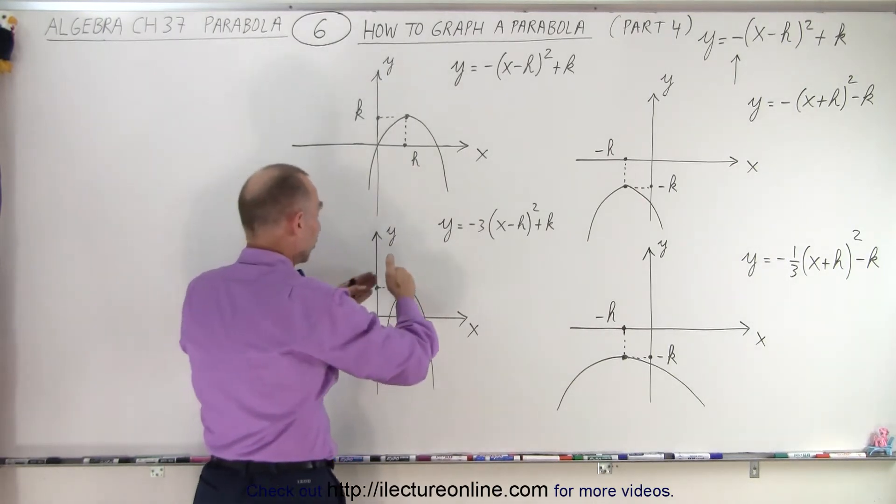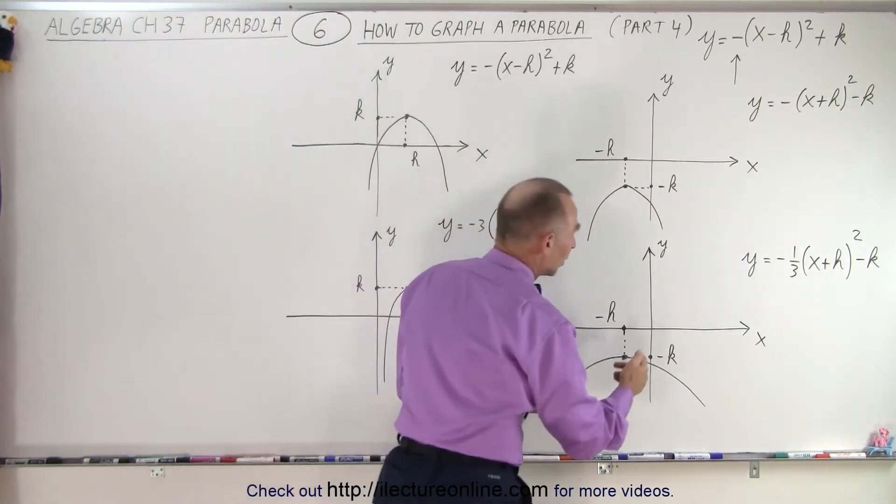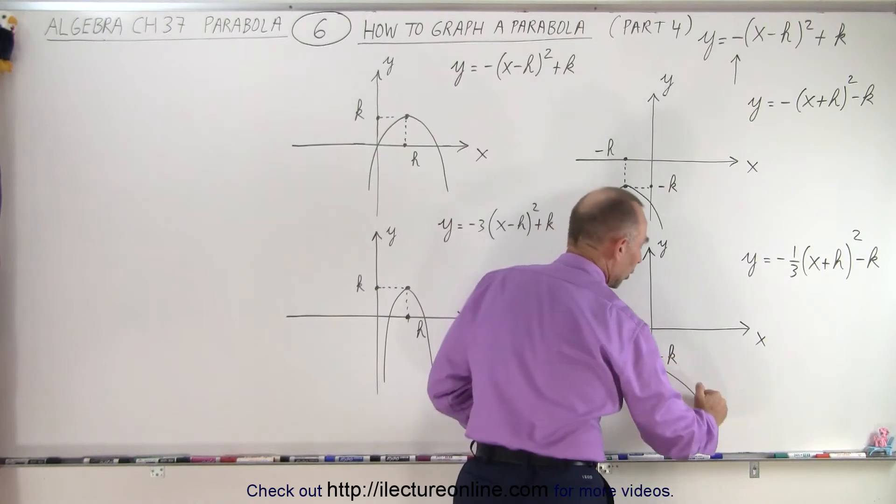And because in this case, the value for Y grows faster in a downward direction, a negative direction, here the value for Y grows more slowly, and that's why the parabola opens wider.